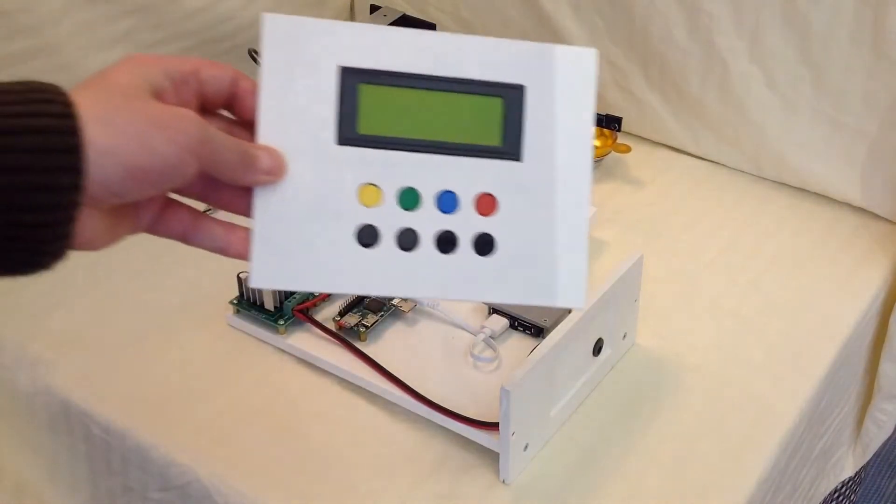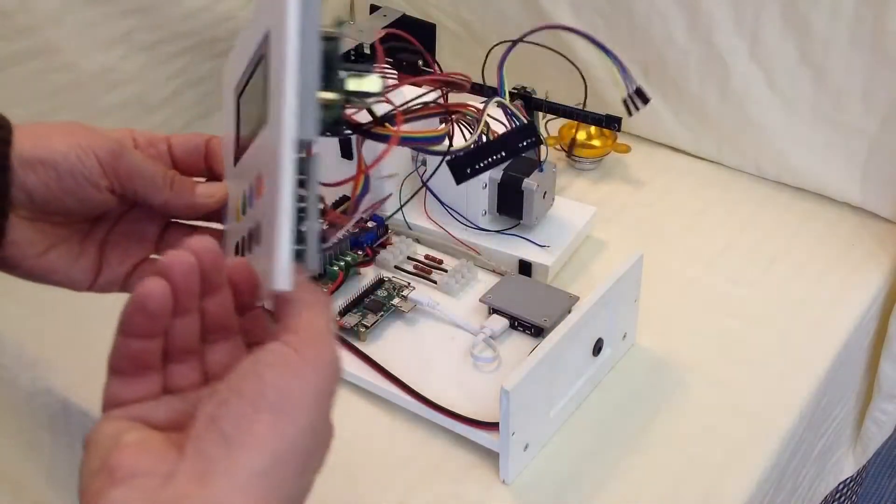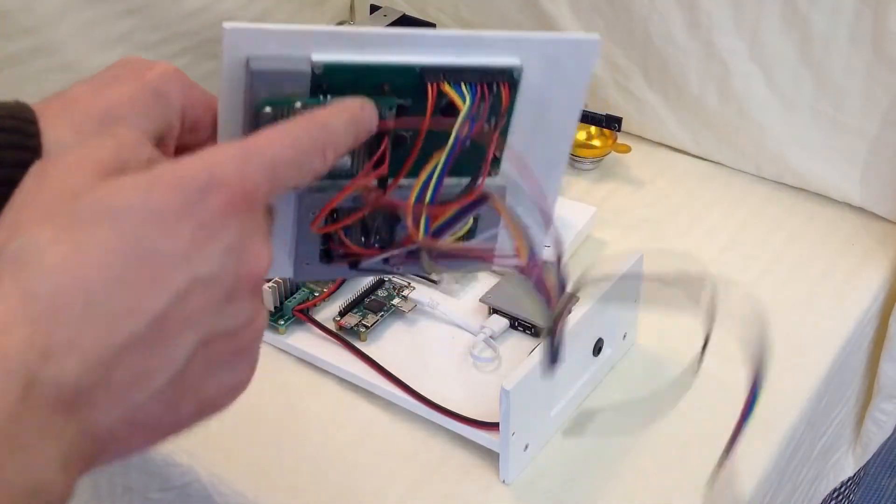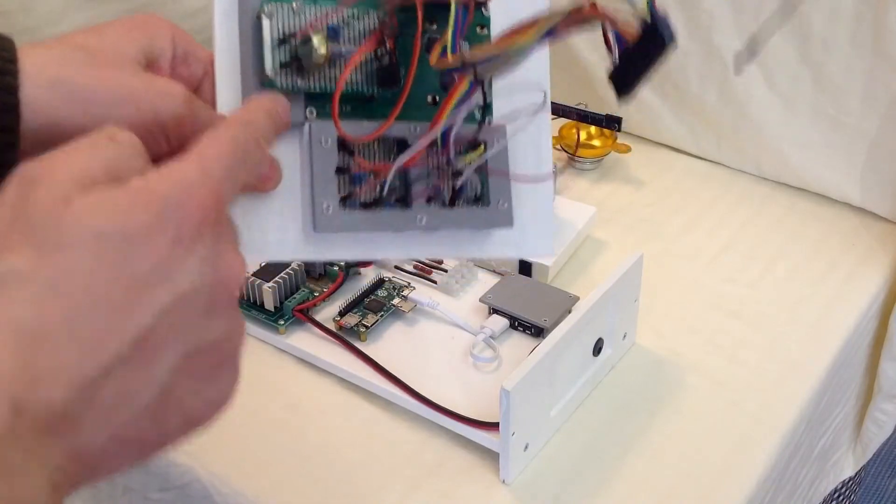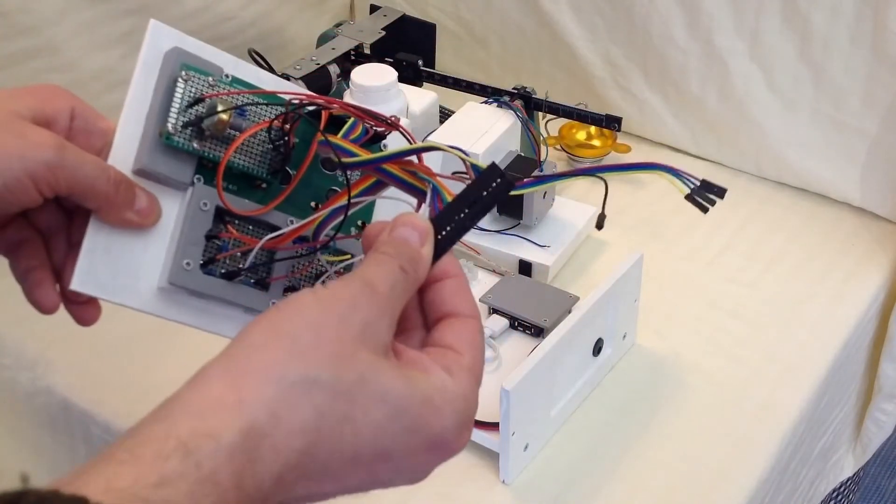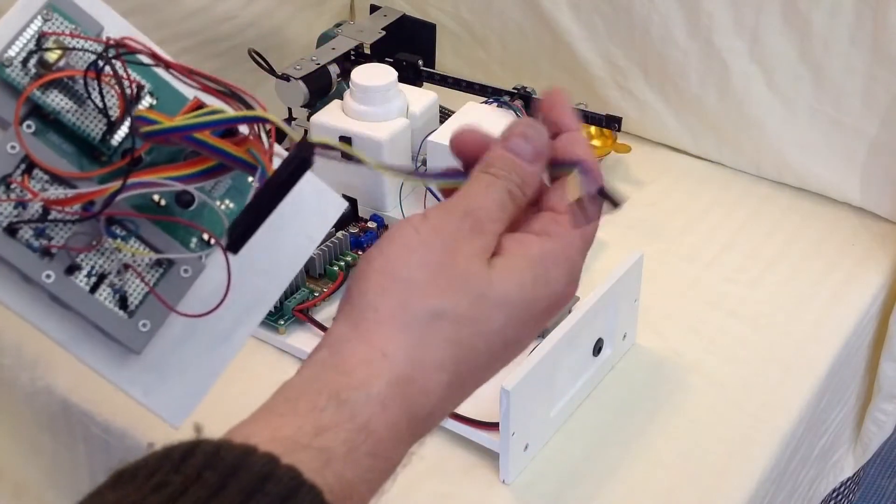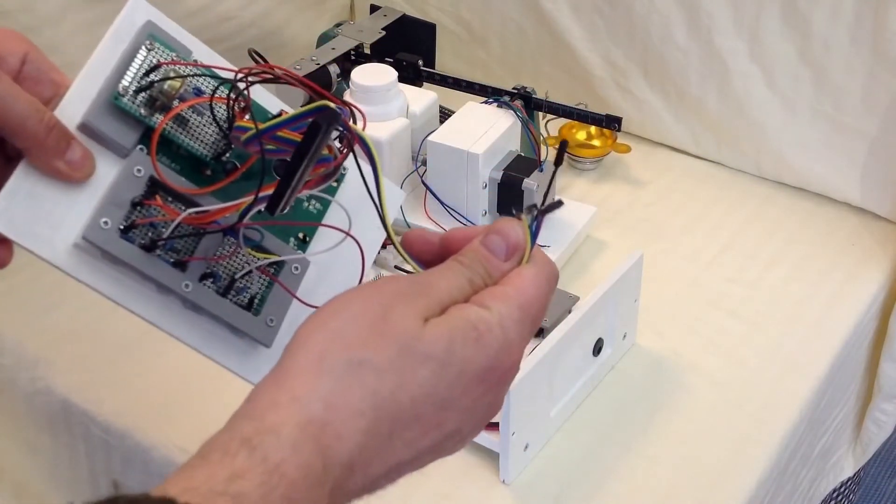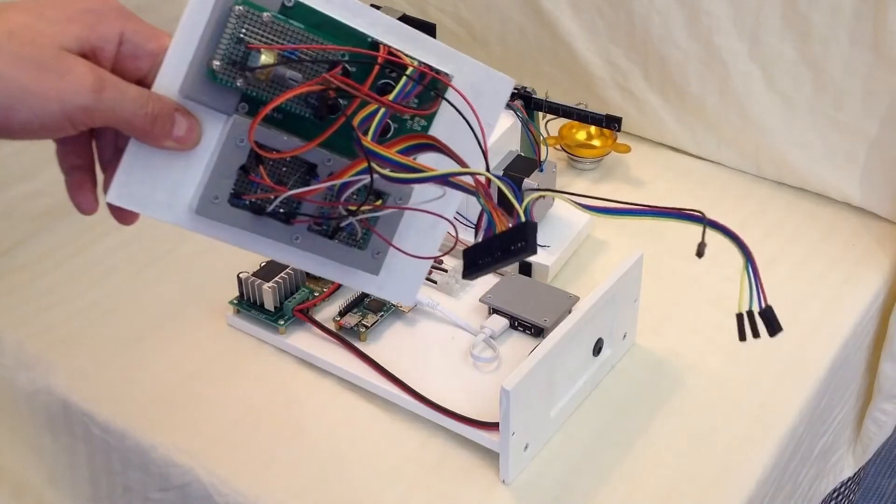Then we have the interface panel. It consists of a standard LCD 20 characters by 4 rows, a home soldered PCB and momentary push buttons. All wired to a DuPont connector that fits to the Raspberry Pi's GPIO pins. There are also wired connectors that go to the stepper motor driver board.